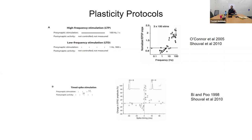There's frequency-dependent plasticity — a pre-synaptic only protocol. Slow frequency input doesn't induce plasticity; medium frequency gives depression; high frequency gives potentiation. There's also spike timing-dependent plasticity (STDP): post-synaptic spike before pre-synaptic gives depression; pre-synaptic before post-synaptic gives potentiation.